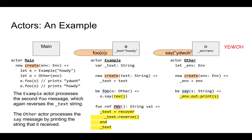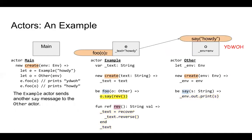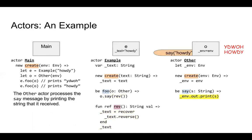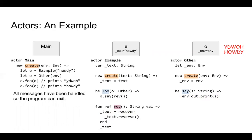The example actor processes the second foo message, reversing the string again, while the other actor processes the say message and prints the string it received — 'howdy' spelled backwards. Then the example actor sends another say message to the other actor, which prints 'howdy' — because the string was reversed back to forward. Finally, all messages have been handled and the program exits. This is how actors interact by message passing in Pony.